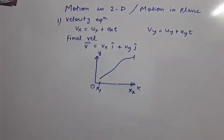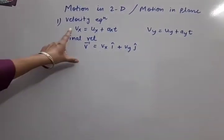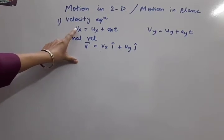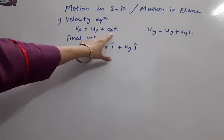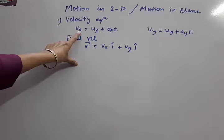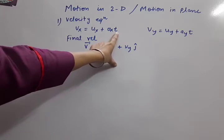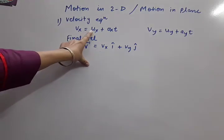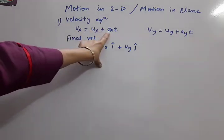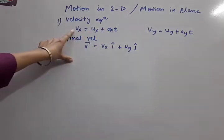Now we have to understand first how the equations will be used, and then we will practice numericals. For the velocity equation — the final velocity equation which we use as v = u + at generally for the straight line — now if the object's motion is in the x-y plane, we have to use it this way: vx = ux + axt. Time is a scalar quantity, so there will be no x or y attached to it, but u, v, and a are vectors.